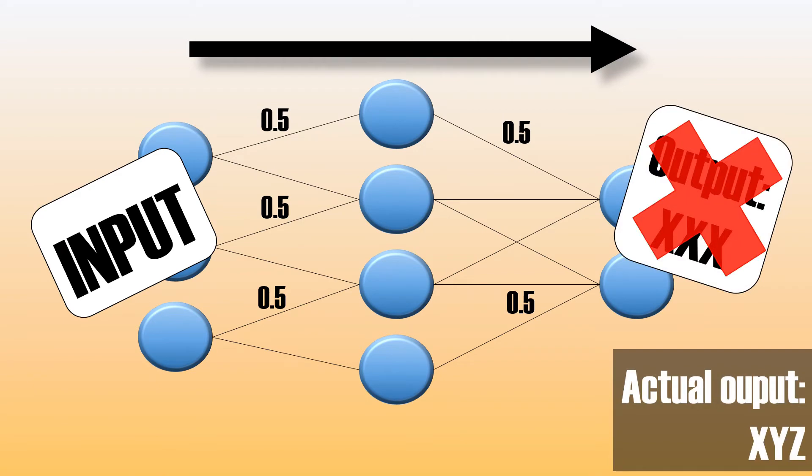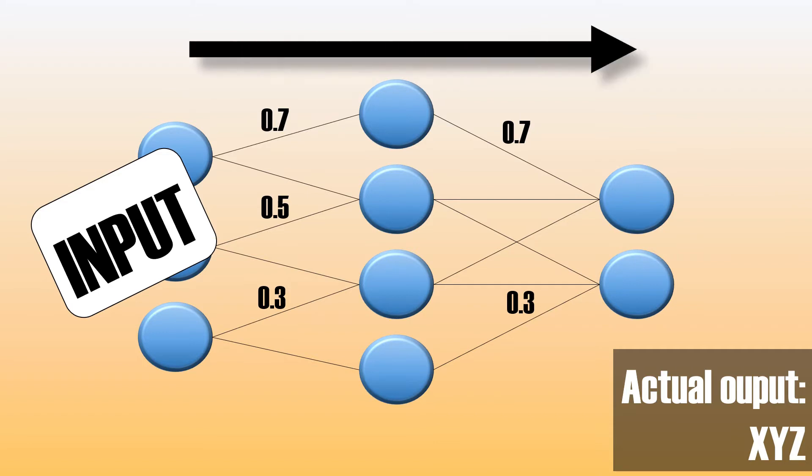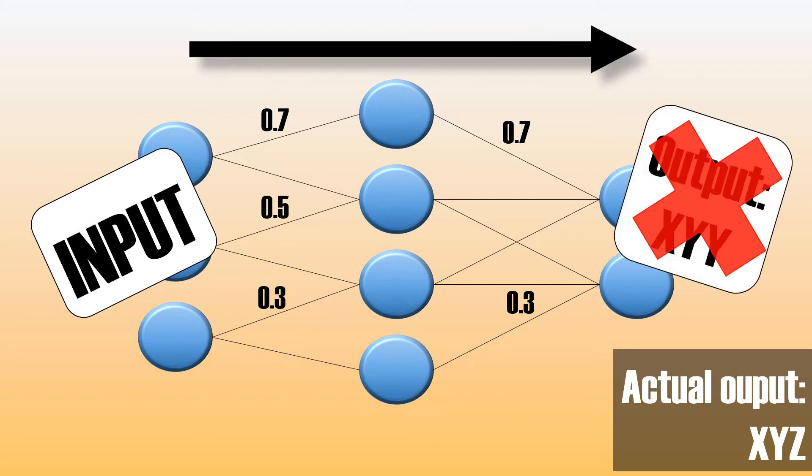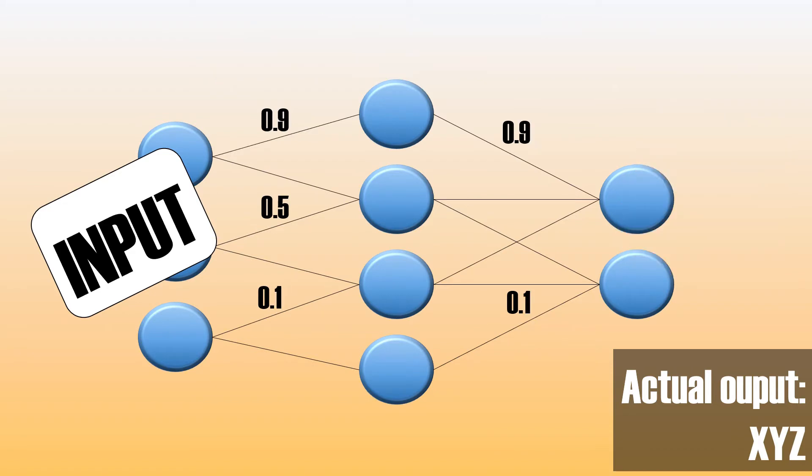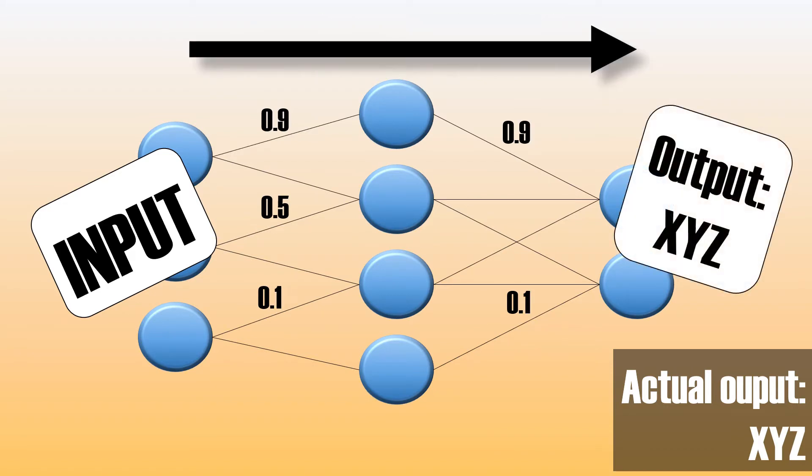Then, during the training of the model, examples for which the output is known are repeatedly presented to the network, and the answers it gives are compared to the known outcomes. This information is then passed back through the network, which then gradually updates the weights of the connections. So over time, the model becomes more accurate in making predictions.